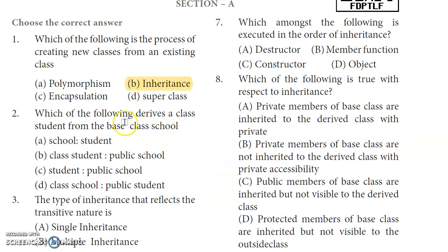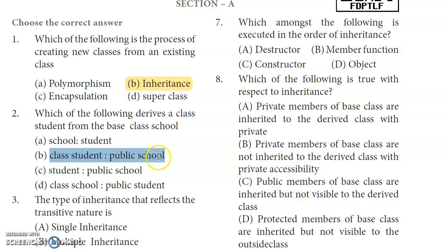Second question: Which of the following derives a class Student from the base class School? First, we specify the derived class name, then the base class name. So the answer is: class Student : public School.